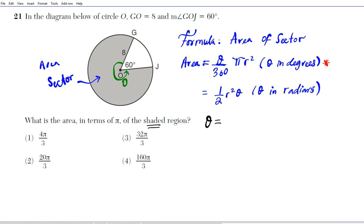The angle that you add to 60 to get 360. So theta is going to be full circle, which is 360, minus the angle we have, 60. So theta is going to be 300 degrees. That's the central angle for the shaded region. Radius r is 8, as given here.